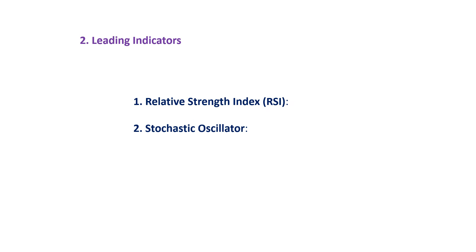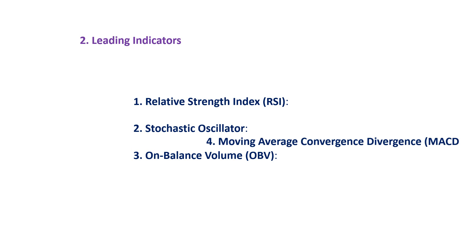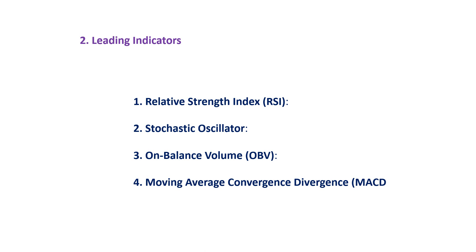Number two, stochastic oscillators: this indicator compares a security's closing price to its price range over a specific time period, helping identify when potential reversal points will occur. Number three, On-Balance Volume OBV: OBV measures buying and selling pressure by adding or subtracting volume based on price movement, and is used to confirm trends and identify potential reversals. And finally, number four, Moving Average Convergence Divergence MACD: MACD indicators can also be used as leading indicators when the histogram bars diverge from the price action.